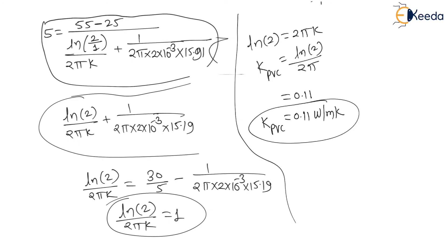So my dear students, the answer is 0.11 Watt per meter Kelvin. In the fill-in-the-blanks you have to type 0.11 to get full marks. Thank you dear students. In the next lecture we will see one more numerical on this topic which was asked in a previous GATE examination.